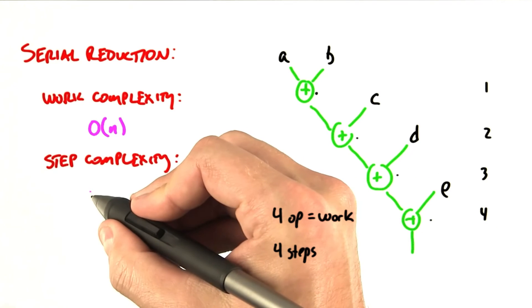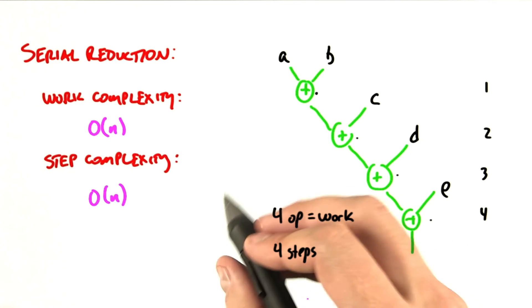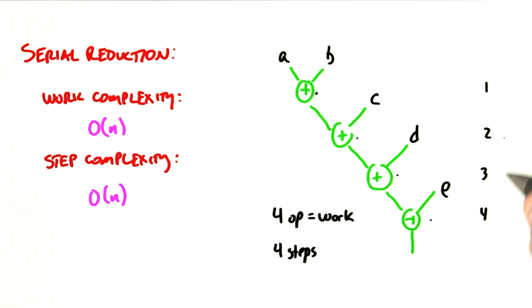Our step complexity is also order of n, meaning that if we double the size of the input, we double the number of steps it takes to compute the output.